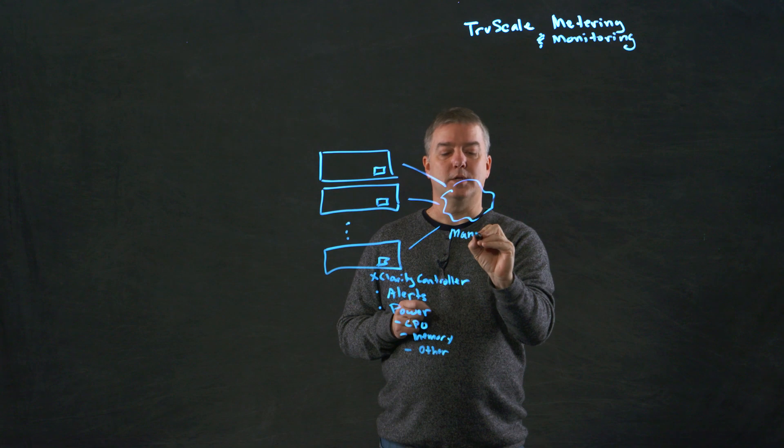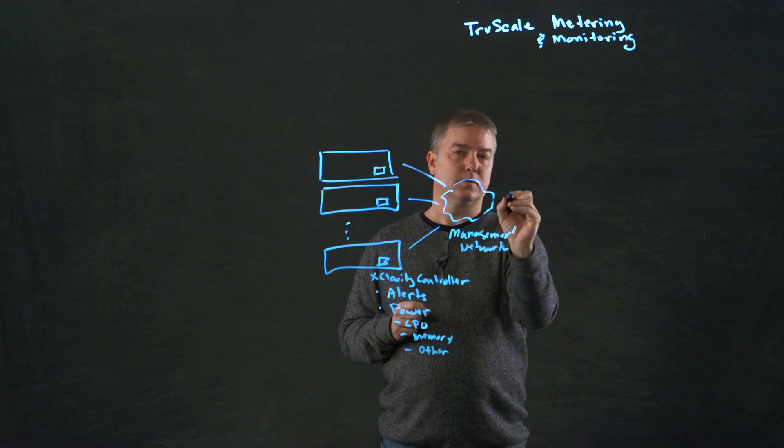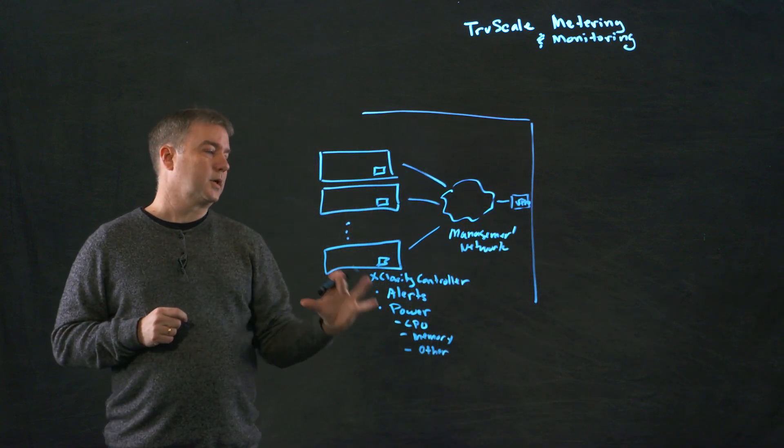If you think about TruScale, typically what you'll have is you'll have our systems, and they'll be configured with this management network right here. Within that, we're going to have the customer data center, and in the customer data center, what we'll do is we'll architect in a VPN, a virtual private network, and so this is all within the customer data center.